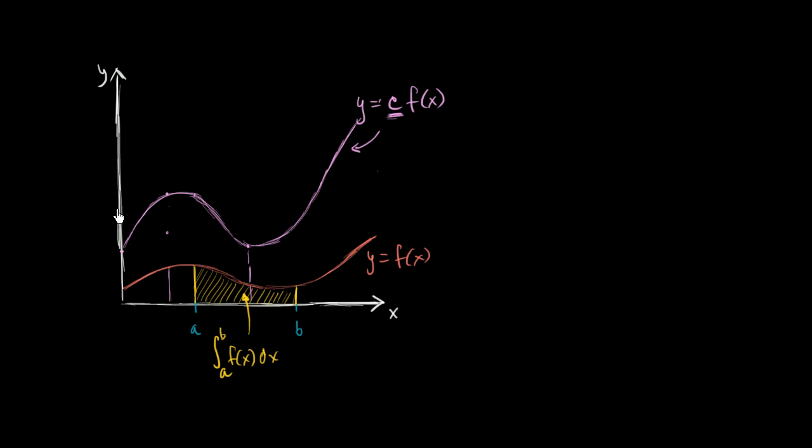Now, what do we think the area under this curve is going to be between a and b? What do we think this area right over here is going to be? And we already know how we can denote it. That area right over there is equal to the definite integral from a to b of the function we're integrating, c f of x dx. To make the question a little bit clearer, how does this relate to this? How does this green area relate to this yellow area?